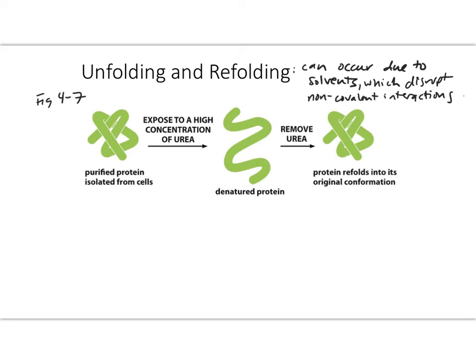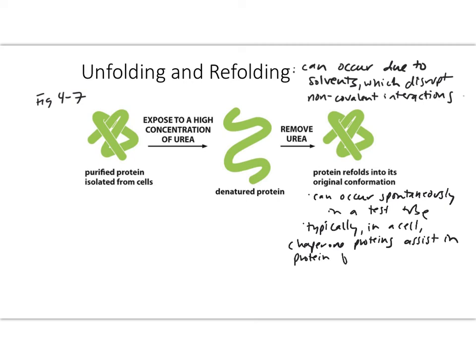Then what's interesting is, again, we're in a test tube system to try to understand this purified protein. If we remove the urea, then this protein will spontaneously refold into its original conformation. So it can occur spontaneously in a test tube. Typically in a cell, this is a more challenging process and chaperone proteins are used to assist in protein folding. But a cell is a lot more complex location than a test tube.